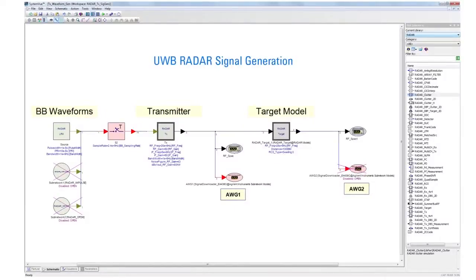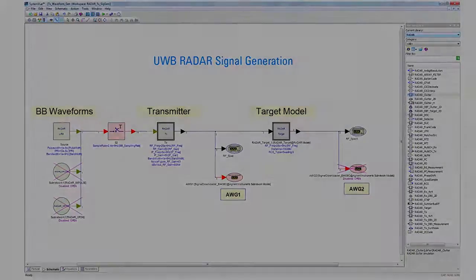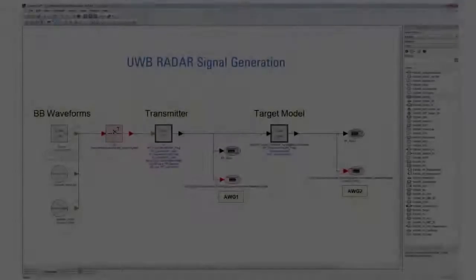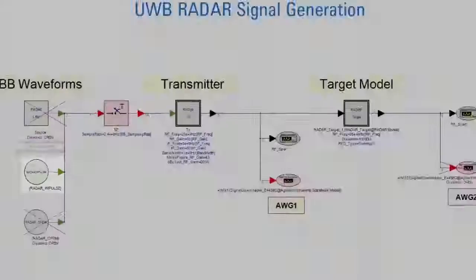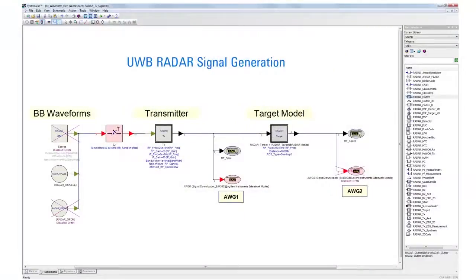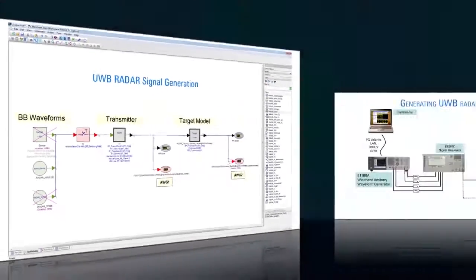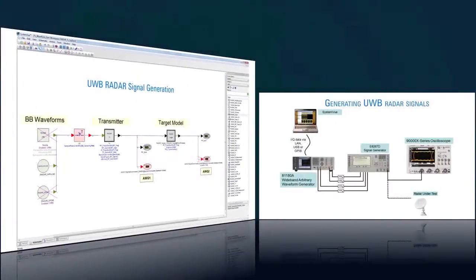Let's take a look at generating the three types of UWB signals. First, we will create an impulse UWB signal. A low-cost impulse UWB waveform is often used for through-wall detection. In the SystemVue schematic, the impulse source is activated to create the signal with a 1 GHz bandwidth, a 2 nanosecond pulse width, and a 10 microsecond repetition interval.